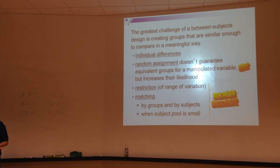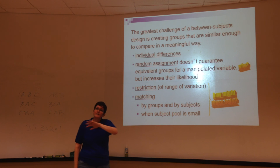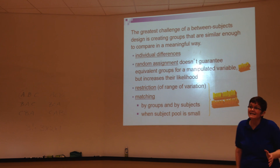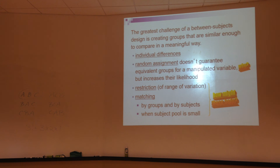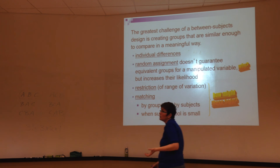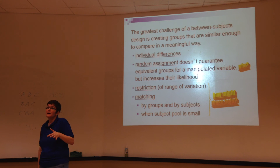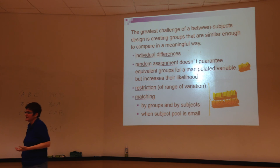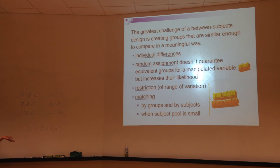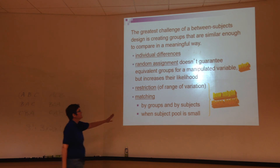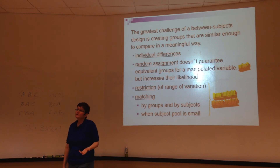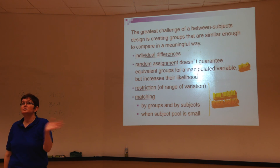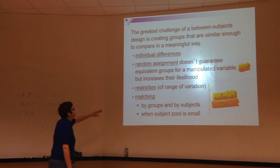That's great if you have a really big sample — the bigger the sample, the more likely you are to get individual differences evenly distributed across conditions. But random assignment doesn't guarantee that, because it can result in non-equivalent groups — sometimes random assignment randomly puts all the fat dogs in one category. So there are other things we can do, like matching, to try and improve the ability of random assignment to distribute things across conditions.